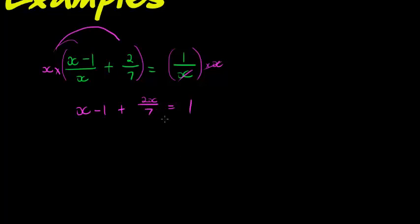Then I see I still have a fraction. What do I do with fractions? Well, I multiply with the denominators. So whatever's still in the denominator, this time it's a 7.